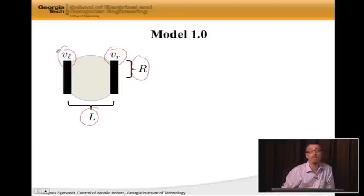and V sub L, which is the rate at which the left wheel is turning. These are the two inputs to our system. So these are the inputs.